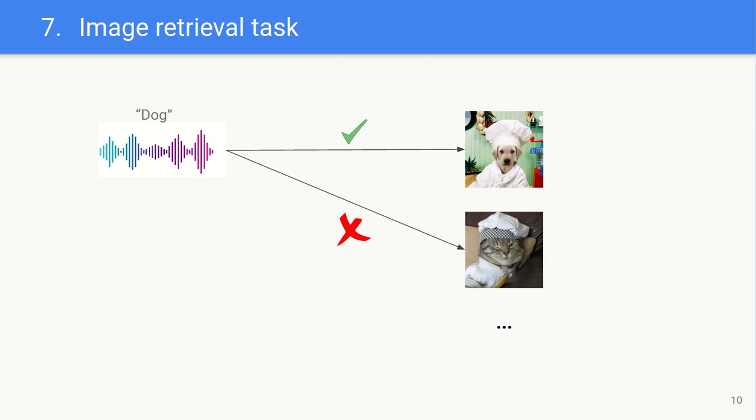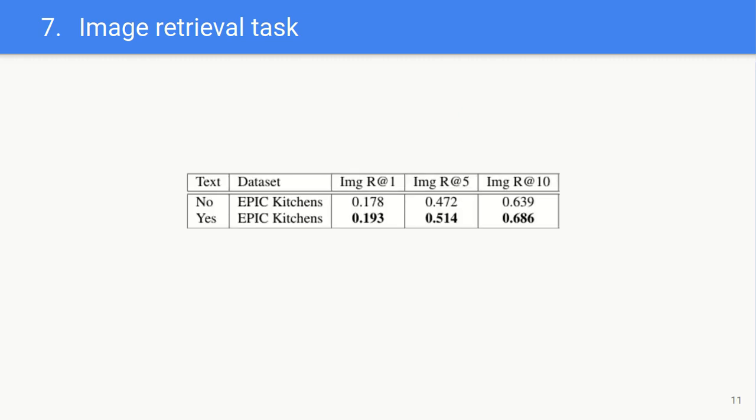In order to assess the quality of the embeddings, we use the image retrieval task. Here, we aim at finding the corresponding image given a speech query. Metrics we use are Recall at 1, Recall at 5, and Recall at 10. And we see that we improve performance in all three of them when using text at train time. Note that during evaluation there is no presence of text. It is only for training.